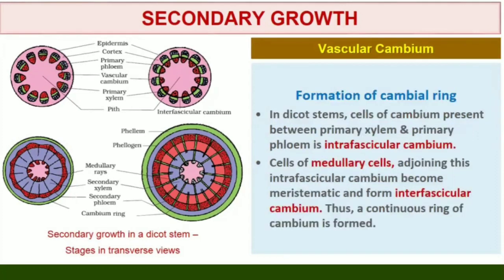Formation of Cambium Ring. In dicot stems, the cells of cambium present between primary xylem and primary phloem constitute the intrafascicular cambium. The cells of medullary rays adjoining these intrafascicular cambium become meristematic and form the interfascicular cambium. Thus, a continuous ring of cambium is formed.